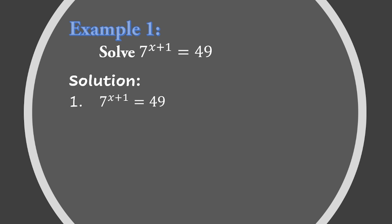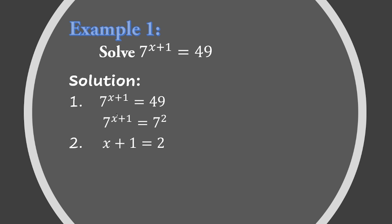So our equation becomes 7 raised to (x + 1) equals 7 raised to 2. Now that our bases are equal, we can equate the exponents using the Equating Exponents Property. The exponent on the left side is x + 1 and the exponent on the right side is 2, so we have x + 1 = 2.